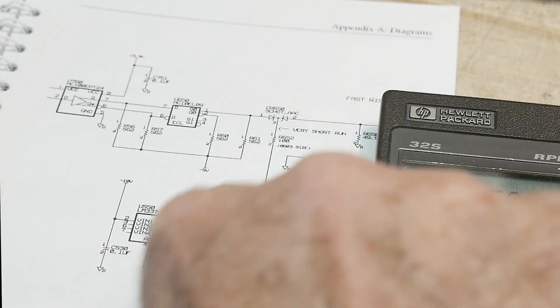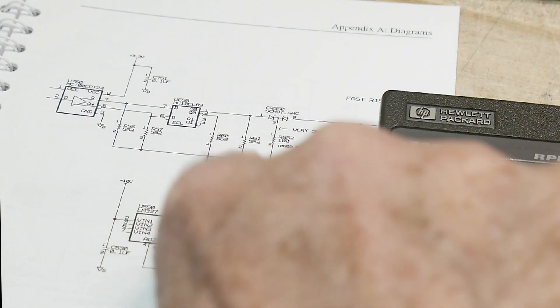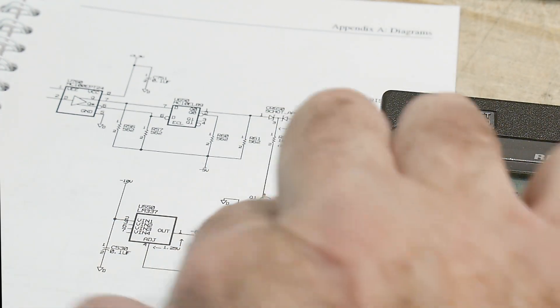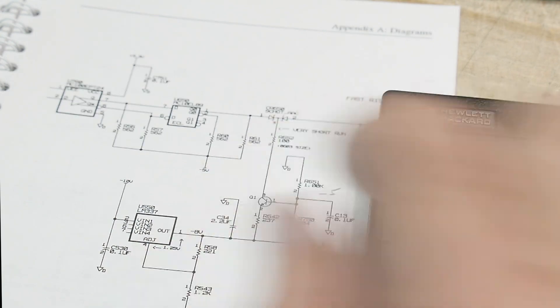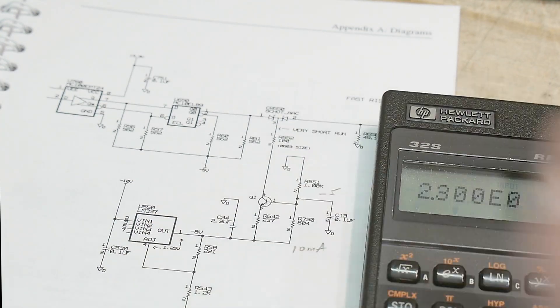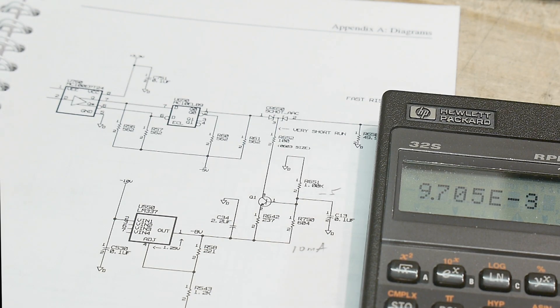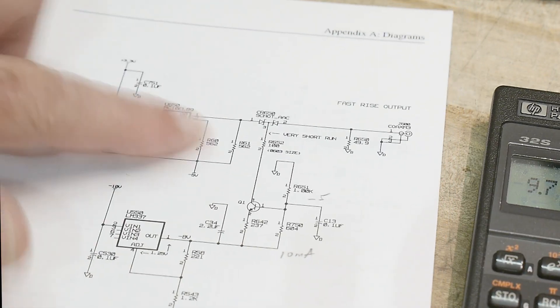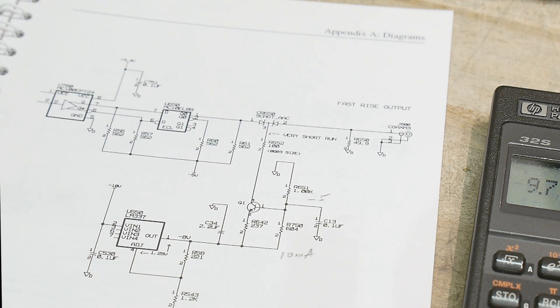But we have that diode drop in there as well, so let's subtract off 0.7 volts. So we really have 2.3 volts across a 237 ohms. If you put in 237, you get 9.7 milliamps. So this is set up to be a 10 milliamp drive.